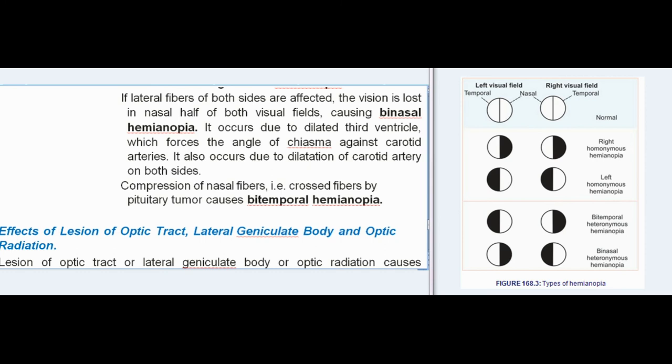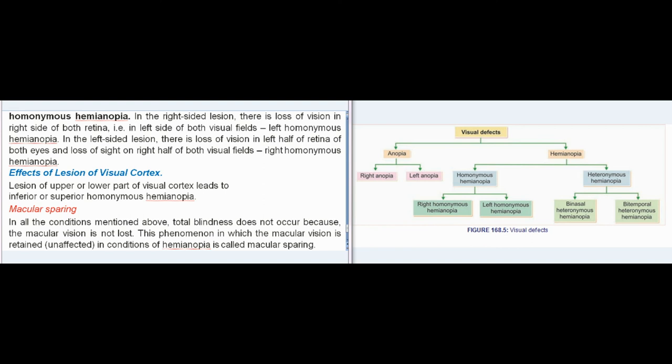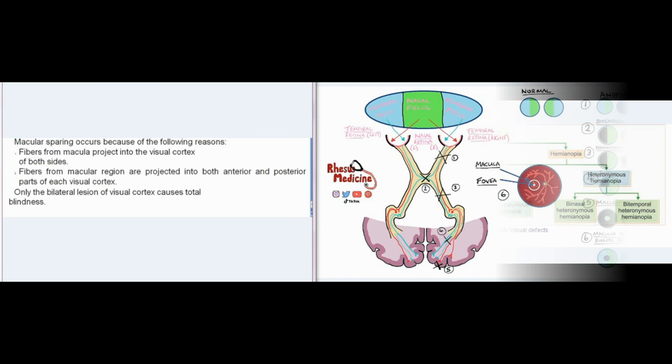Effects of lesion of optic tract, lateral geniculate body, and optic radiation: Lesion of any of these causes homonymous hemianopia. In right-sided lesion, there is loss of vision in the right side of both retinas, i.e., left side of both visual fields — left homonymous hemianopia. In left-sided lesion, there is loss of vision in the left half of retina of both eyes and loss of sight in the right half of both visual fields — right homonymous hemianopia. Lesion of the upper or lower part of visual cortex leads to inferior or superior homonymous hemianopia. In all these conditions, total blindness does not occur because macular vision is retained — this is called macular sparing.